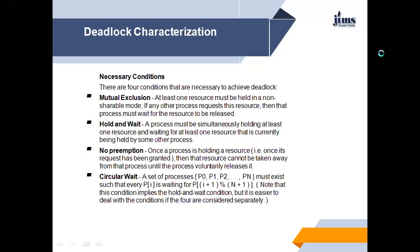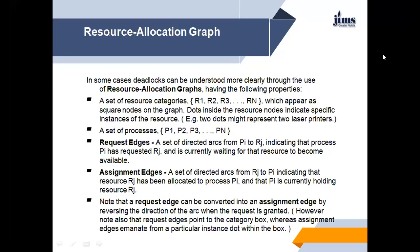Now, resource allocation graph. In some cases, deadlocks can be understood more clearly through the use of a resource allocation graph. The graph has the following properties: a set of resource categories R1, R2, ..., Rn appear as square nodes on the graph. Dots inside the resource nodes indicate specific instances of that resource — for example, two dots might represent two laser printers. A set of processes P1, P2, ..., Pn are also shown. A request arc is a directed arc from Pi to Rj, indicating that process Pi has requested resource Rj and is currently waiting for it to become available. An assignment arc is a directed arc from Rj to Pi, indicating that resource Rj has been allocated to process Pi.